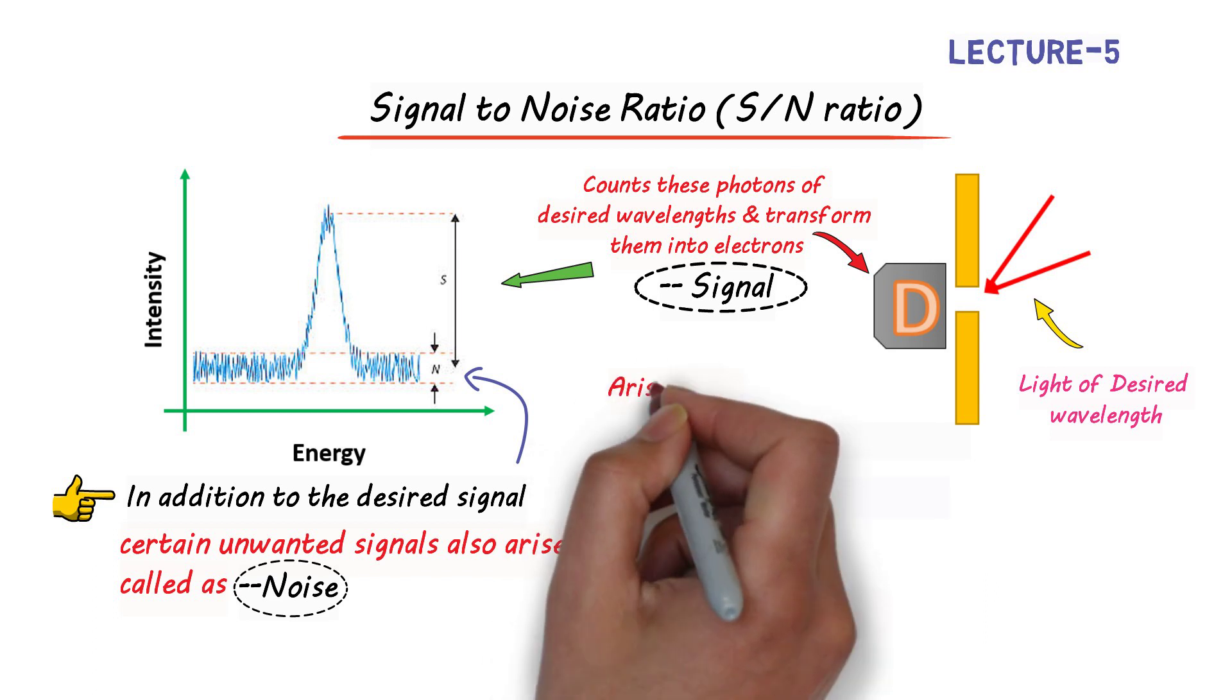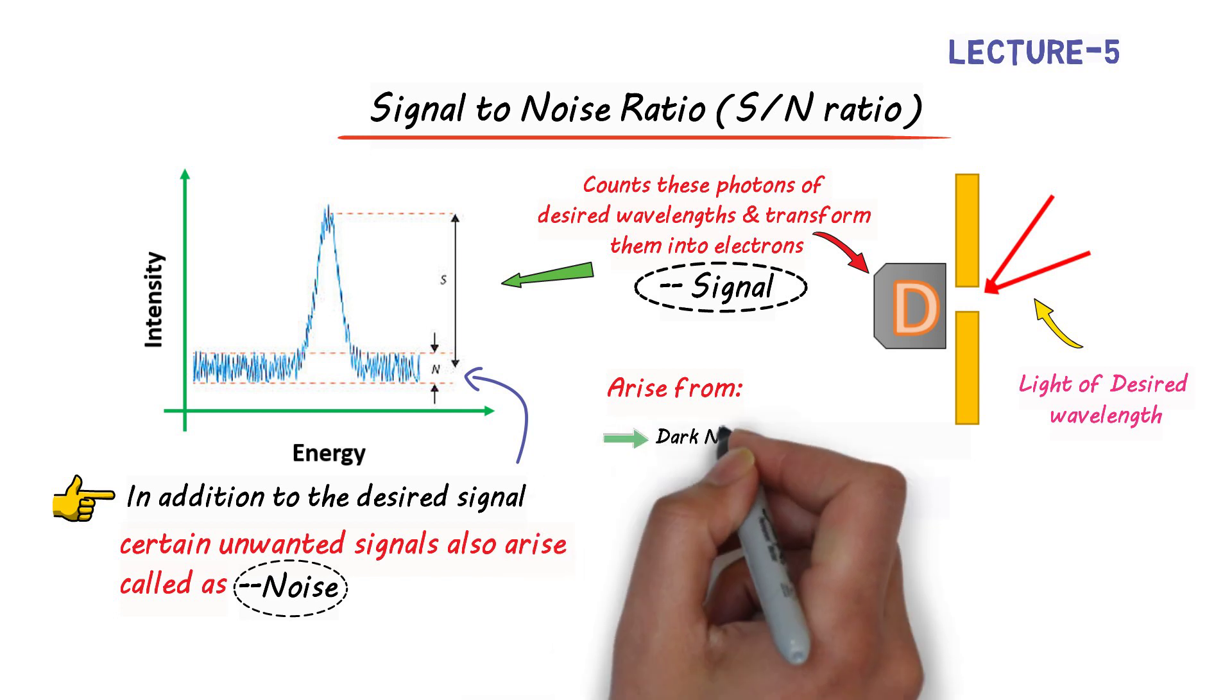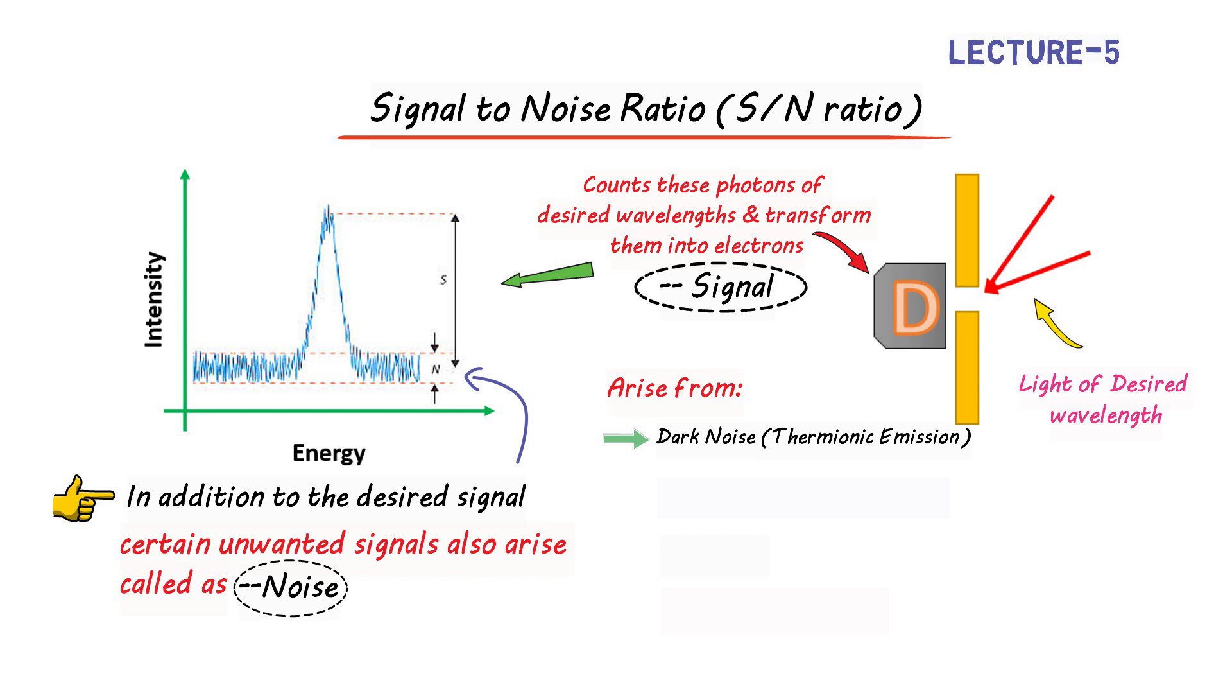This noise in the spectrum can arise from: Number one, dark noise or thermionic emission that occurs because of the ambient temperature at the detector, due to which already produced carriers carry current to create noise. Number two is shot noise or counting noise, which arises due to the variation of number of photons producing electrons in different measurements.